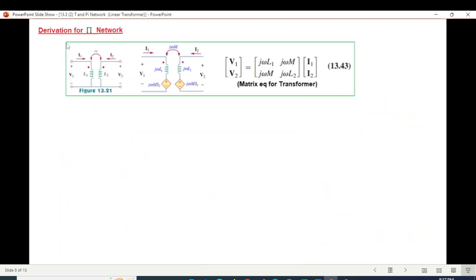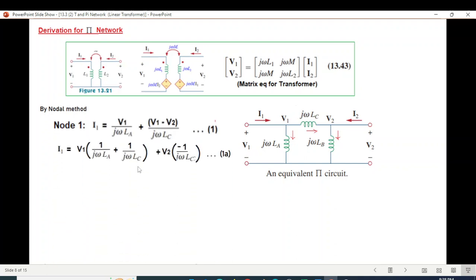Okay, now the second part: derivation for the Pi network. This we had already derived for the transformer. Now this is our Pi network. Here also we will write it in phasor form. And now since there are two nodes here, it is better that we use the nodal method to solve this. So node 1 and node 2. By nodal method: node 1, current entering here. We have assumed these two directions for current leaving, current leaving.